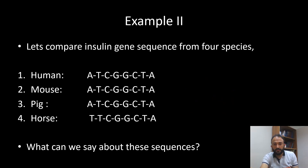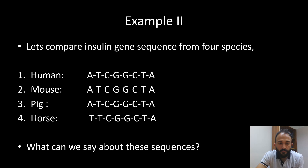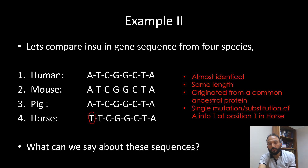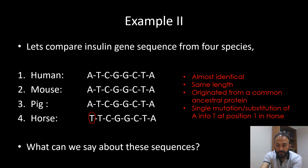Now if we see the next comparison between four sequences, they are again of identical length and also very similar, but there is one site which is probably changed in the descendant — mouse or human — or maybe specifically changed in horse. Almost identical, same length, originated from a common ancestor, but there is a single substitution of A into T at position one in horse. So we can say this is a substitution in horse compared to the other species.